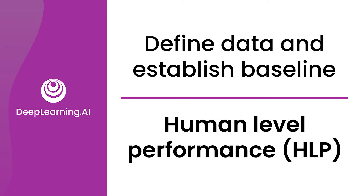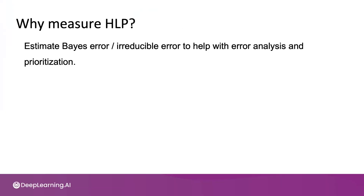Some machine learning tasks are trying to predict an inherently ambiguous output, and human level performance can establish a useful baseline of performance as a reference. But human level performance is also sometimes misused. One of the most important uses of measuring human level performance, or HLP, is to estimate Bayes error or irreducible error, especially on unstructured data tasks, in order to help with error analysis and prioritization, and to establish what might be possible.